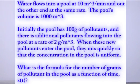Initially the pool has 100 grams of pollutants in the water, and there is additional pollutants flowing in the pool at a rate of 2 grams per cubic meter. When these new pollutants enter the pool, they mix and spread out quickly so the concentration of the pool is uniform in terms of the concentration of the pollutants.